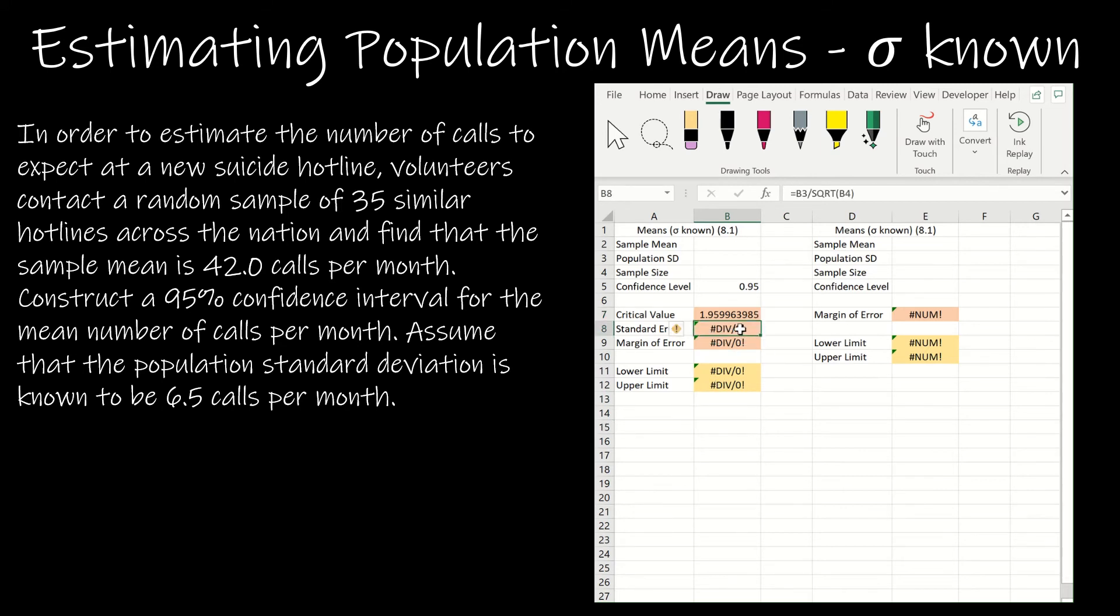Now, the standard error, if you'll recall, is the population standard deviation, which is sigma, divided by the sample size. So as I put these in here, 35 hotlines, and mean was 42, and the population standard deviation was 6.5. So if you'll notice, the standard error is the standard deviation divided by the square root of the sample size. And then if I multiply those two together, I get the margin of error. So that's B7 times B8.